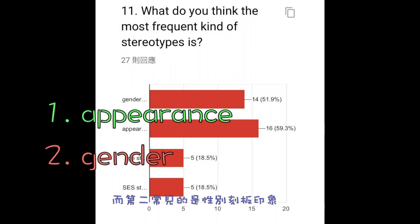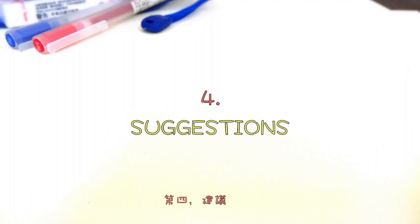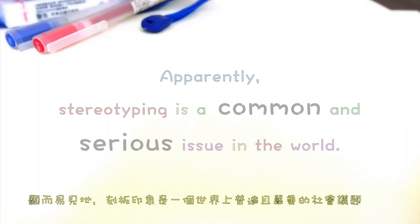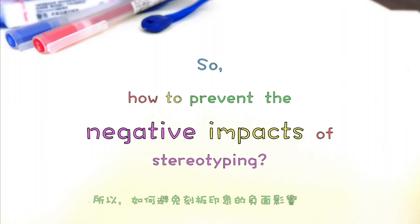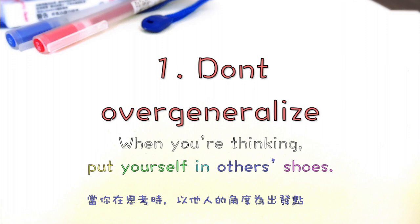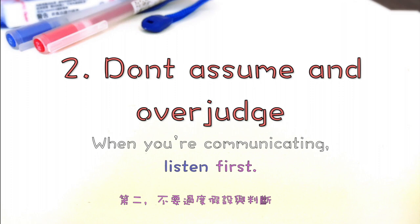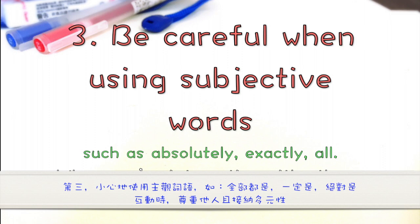Fourth, suggestions. Apparently, stereotyping is a common and serious issue in the world. So, how to prevent the negative impacts of stereotyping? I highly recommend that, first, don't overgeneralize — when you are thinking, put yourself in others' shoes. Second, don't assume and overjudge; when you are communicating, listen first. Third, be careful when using subjective words, such as absolutely, exactly, all. When you are interacting with others, be respectful and embrace diversity. Last, be a detective to identify stereotypes around you and correct them.